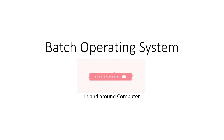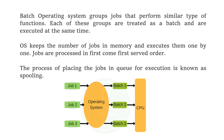In this video, we are going to see the batch operating system, a type of operating system. Batch operating system is an OS that groups jobs that perform similar types of functions. Each of these groups are treated as a batch and are executed at the same time.